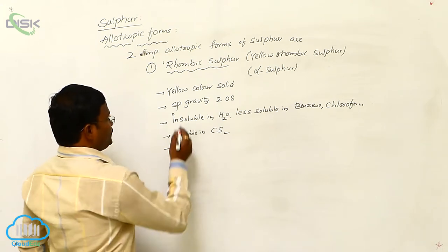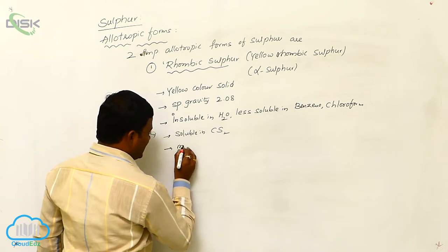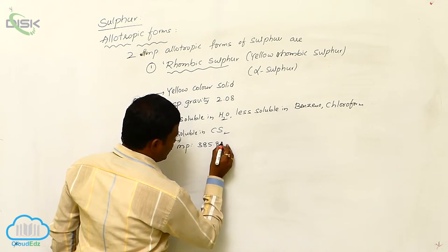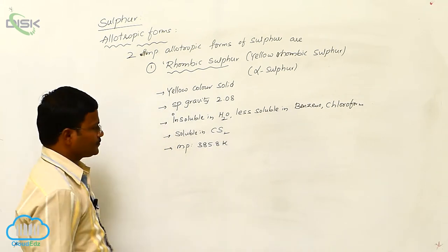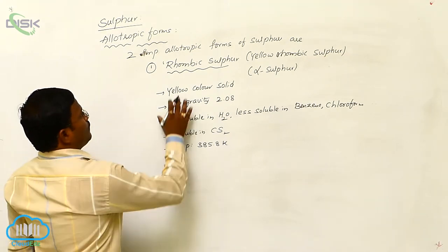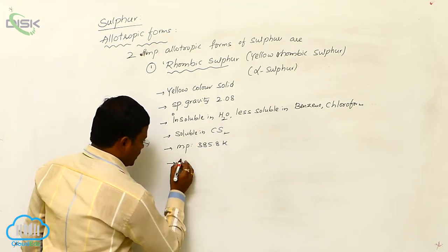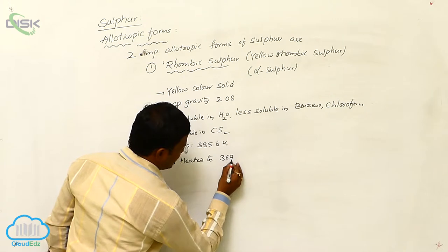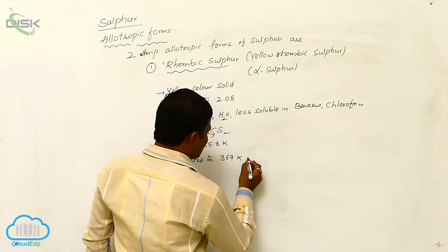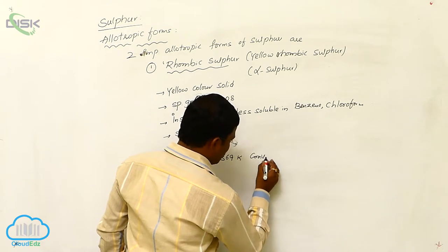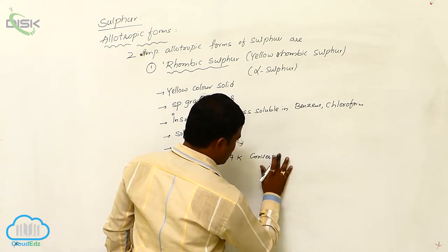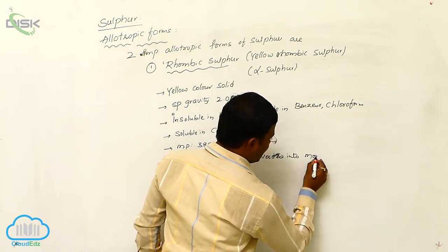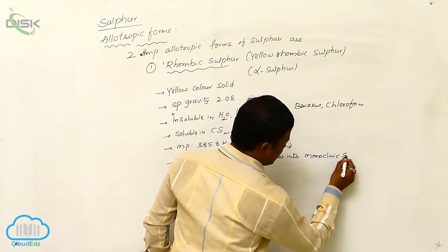Rhombic sulfur is well soluble in carbon disulfide and has a melting point of nearly 385.8 degrees Kelvin. When rhombic sulfur is heated to 369 degrees Kelvin, it converts into monoclinic sulfur.